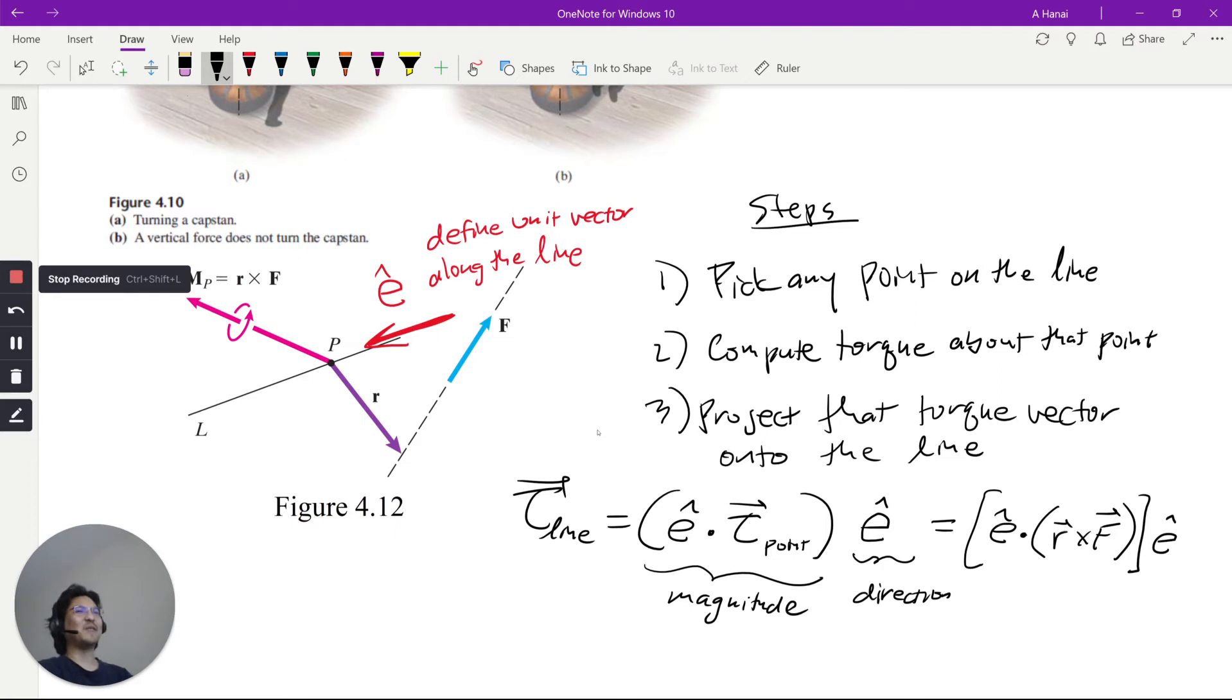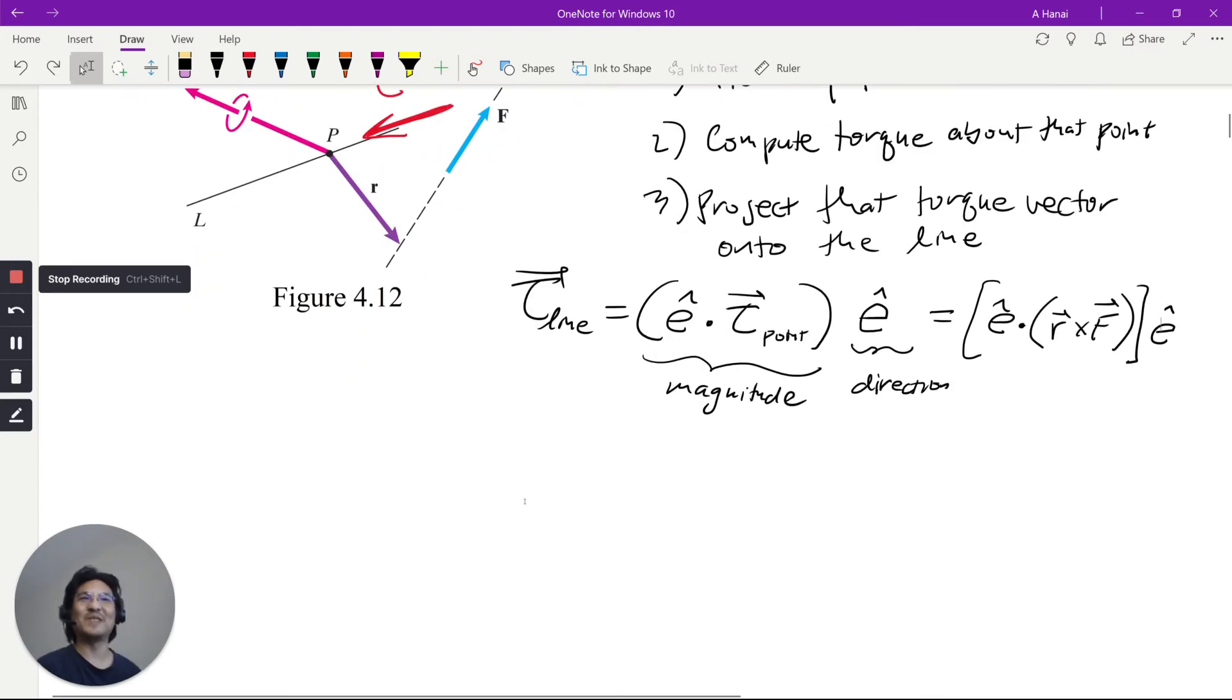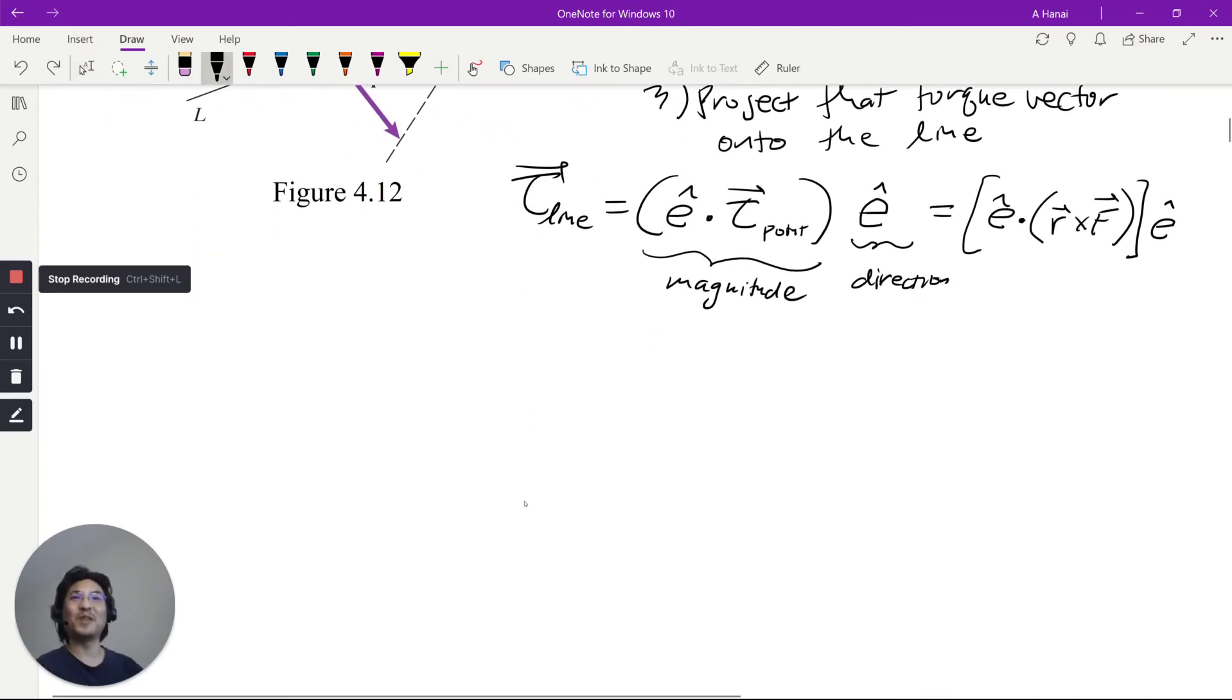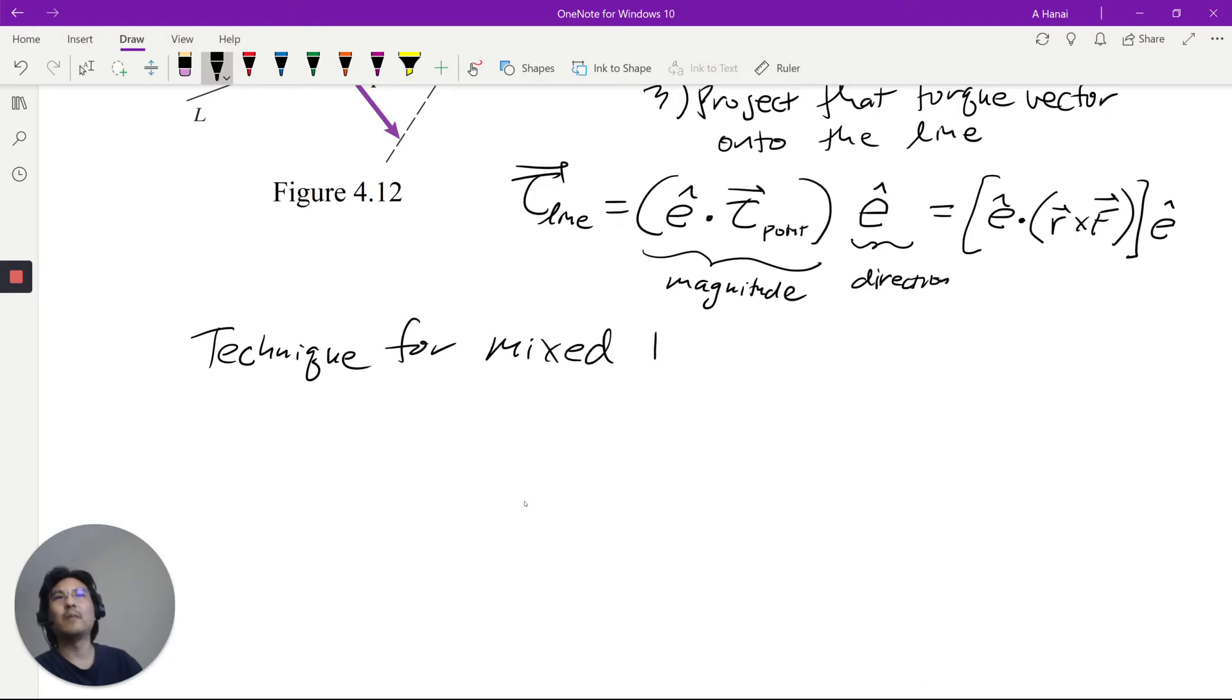Okay, it turns out this is called a mixed triple product, when you have this combination of a dot product and a cross product. So let me show you a computational technique for mixed triple products. So it turns out, like say you have three vectors, A.